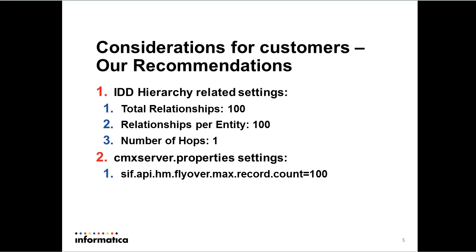The next setting in the cmxserver.properties is the cif.api.hm.flyover.maxRecordCounted, and we recommend you set this value to 100. This setting controls the number of records which are retrieved in the flyover section of the Hierarchy Manager Canvas. So even if your entity has thousands of relationships, we just get the first 100.